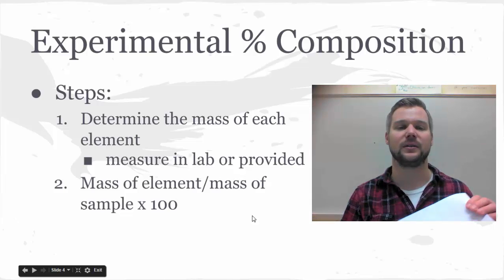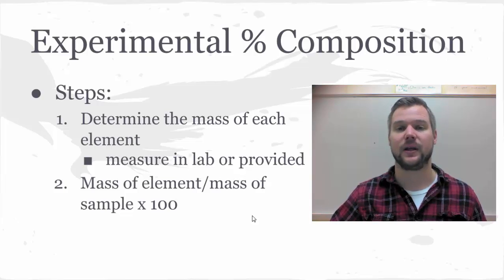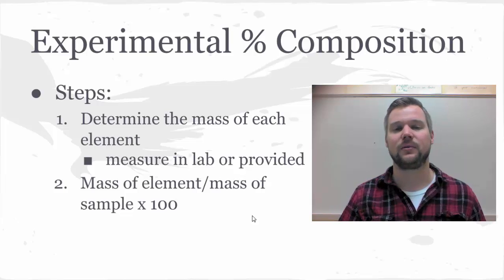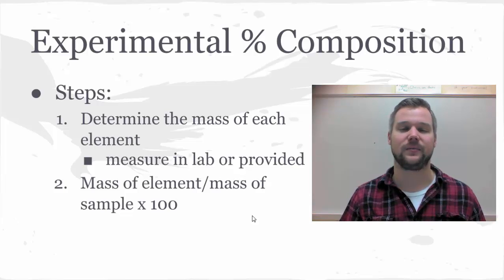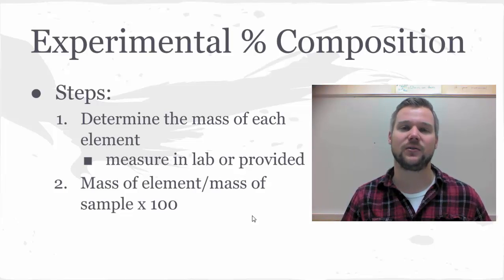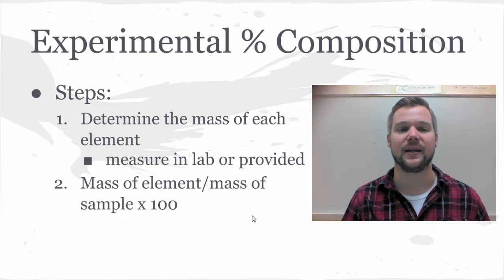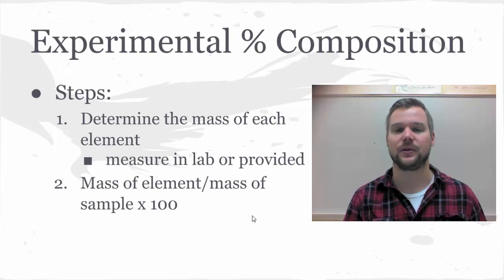We can also do this experimentally, and when we do this experimentally, we use the mass that's derived from an experiment. We're going to have the mass of the whole sample and the mass of a part. Sometimes that's determined by subtracting how much you start with compared to how much you finish, and the difference is the part that's either removed or added. So your step is to determine the mass of each element. That's either provided to you on a worksheet or measured in the lab. Then you take the mass of that element divided by the mass of the sample, times 100 to turn it into a percentage.